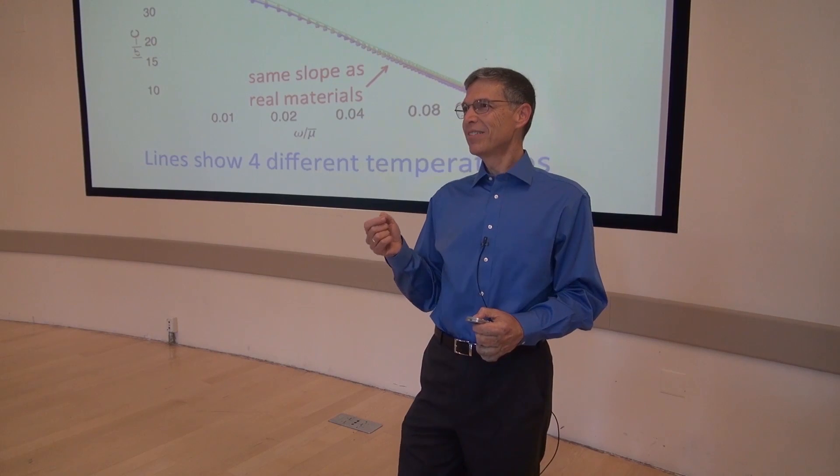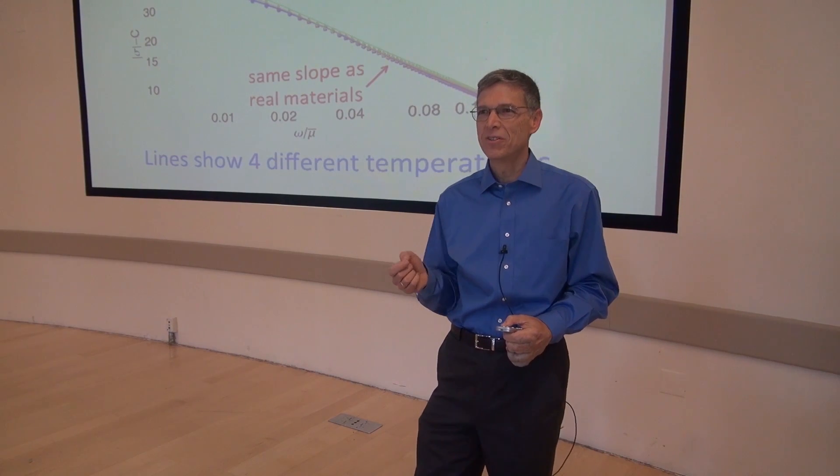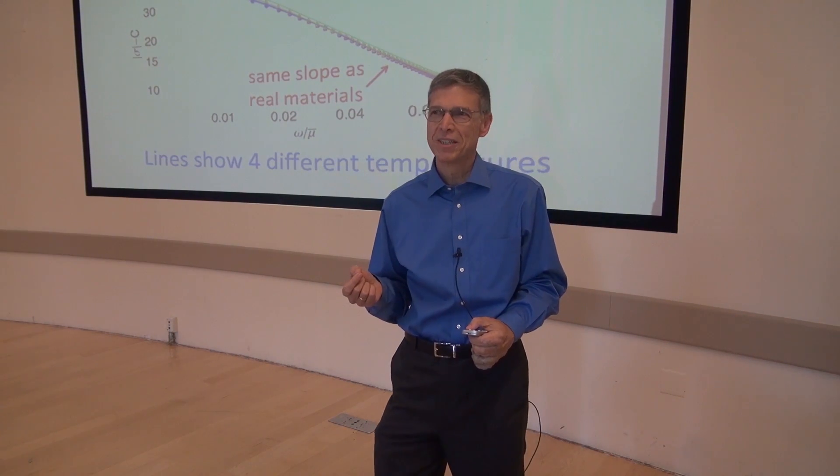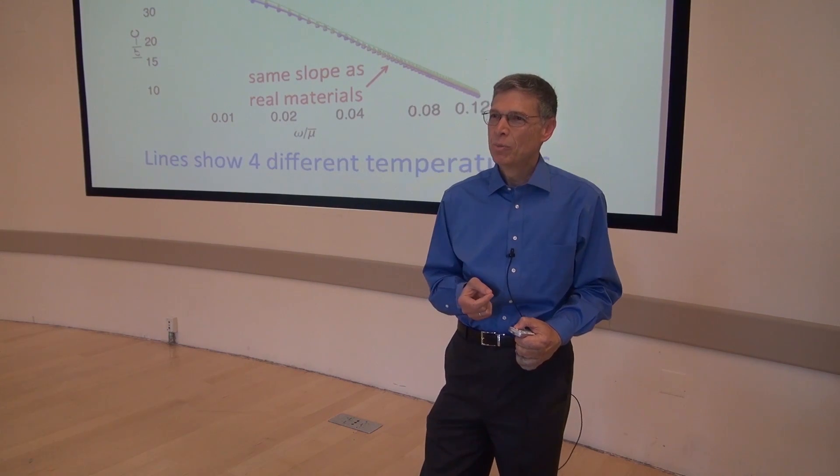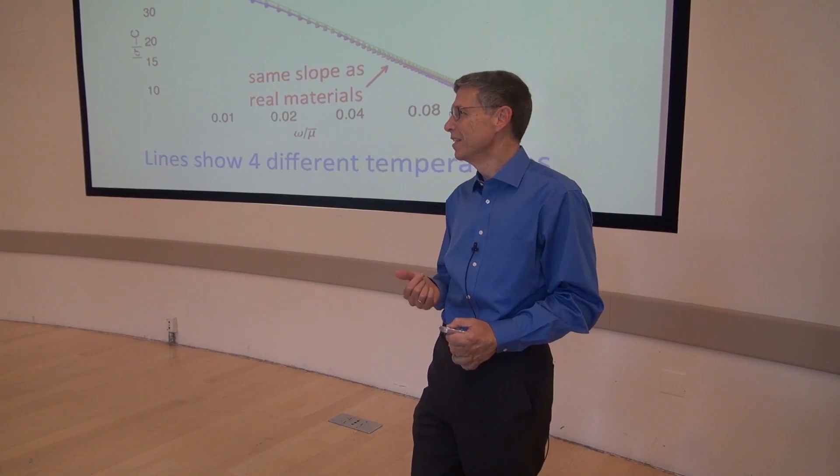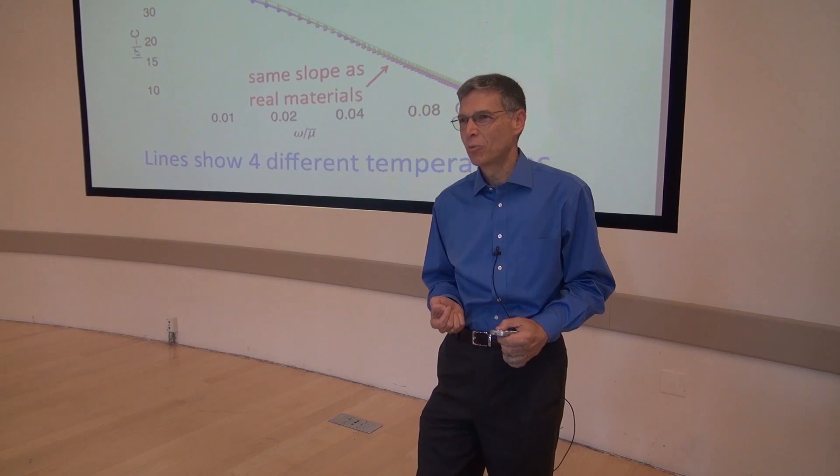Now, I have to caution you that it's not exactly the same. There are some differences between what we calculate in general relativity and what's seen in the real material. But the agreement of the slope is striking. And we really don't understand why it's working so well.